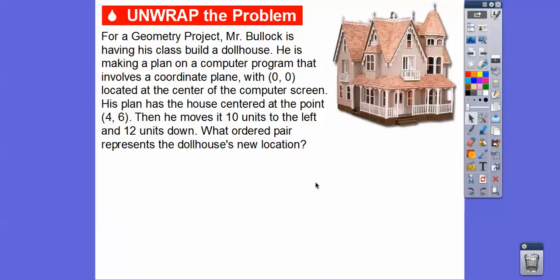So remember, if (0, 0) is right here, then we go over 4, up 6. So that's where this house would be. Then he's going to move that house 10 units to the left and 12 units down. So what's the ordered pair of the dollhouse's new location?